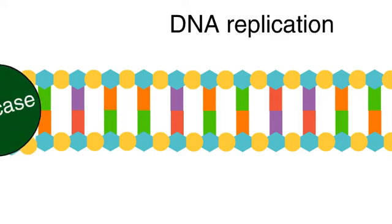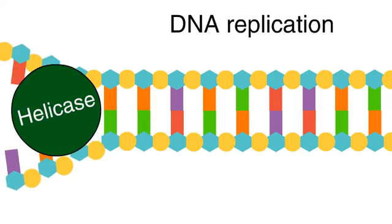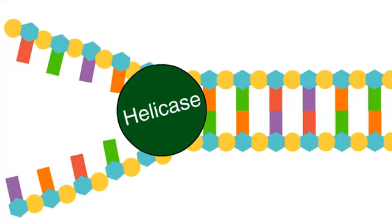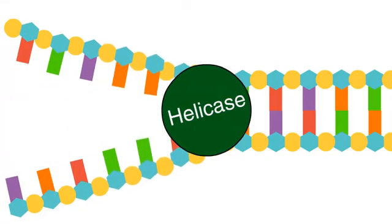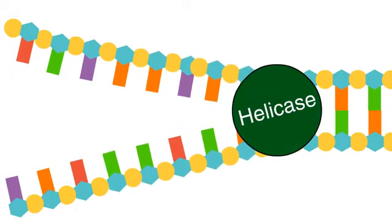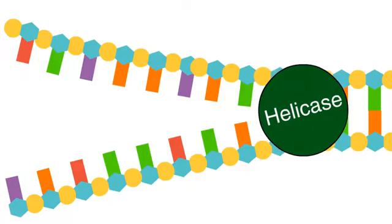As DNA replication begins, the enzyme helicase unwinds the DNA and separates the two strands. Each of these original strands will be used as a template for the creation of a new strand.